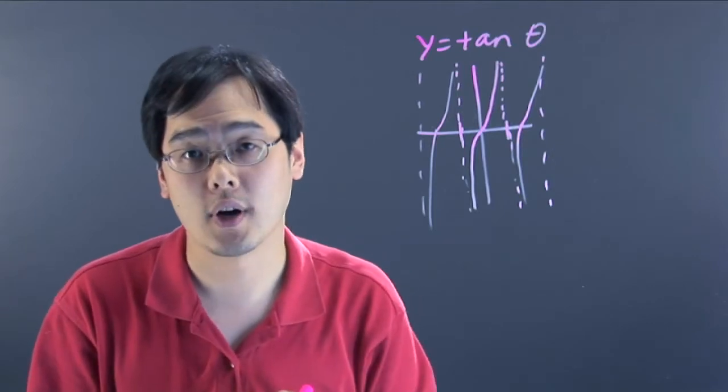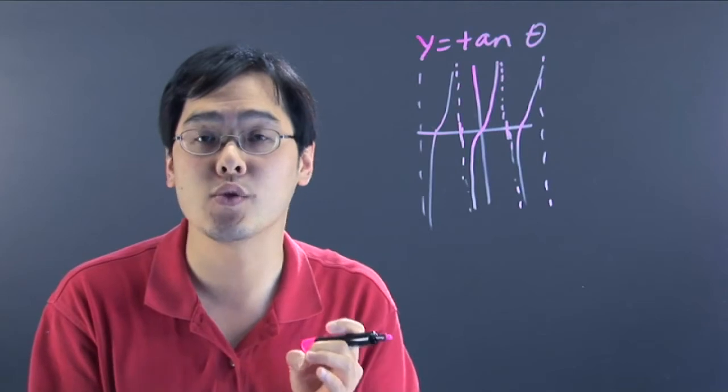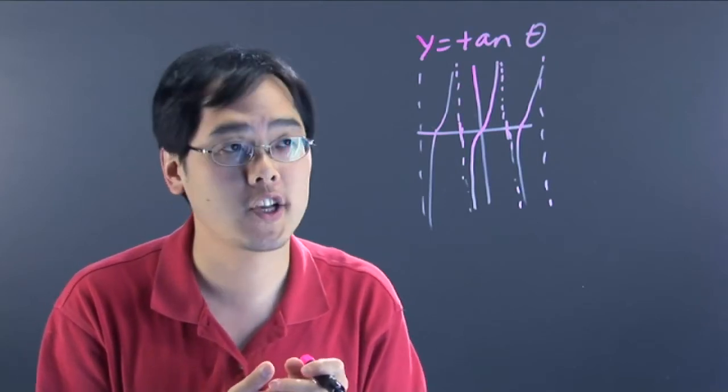Now, how does a negative tangent graph work? Well, a negative tangent graph, if you think about it, the negative sign kind of gives you what we like to call perhaps a vertical reflection of sorts.